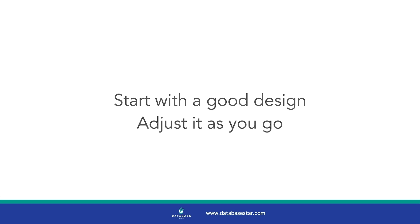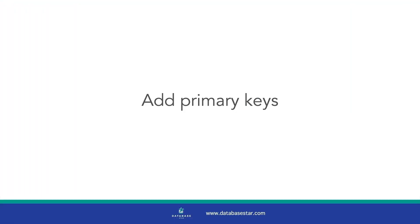SQL tools these days allow you to make changes without starting over. One of the most important parts of a good database design is relating your tables properly. This is how your data stays connected and how you avoid a range of other issues. Make sure every table has a primary key — a column that uniquely identifies each row. Then, for each table that needs to be related, ensure they have a foreign key, which is a column that refers to the primary key in the related table. Keep doing this until all tables that need to be related are related. This makes your database more robust and easier to query.